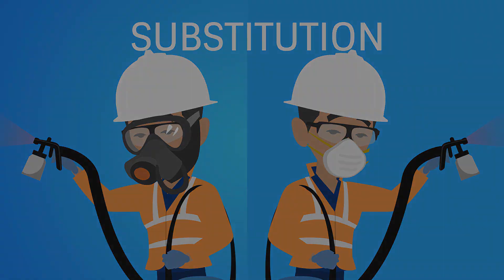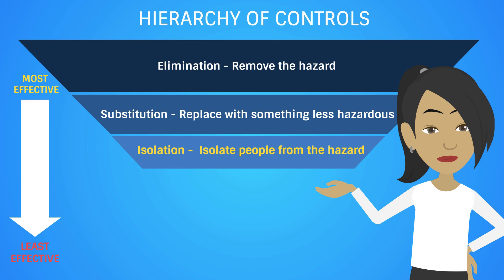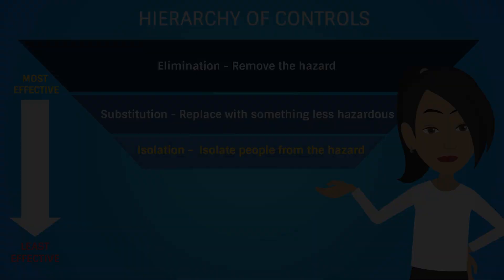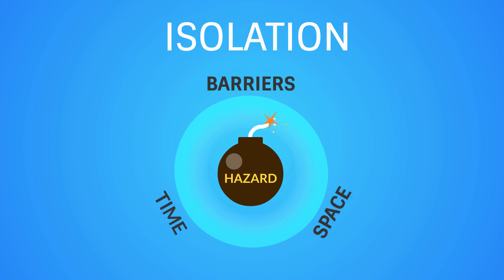The following most effective control down the list is isolation. We do this by separating personnel from the hazard. Examples of this are the use of protective screens, creating distance between personnel and hazards, or conducting hazardous tasks after hours, such as cleaning.